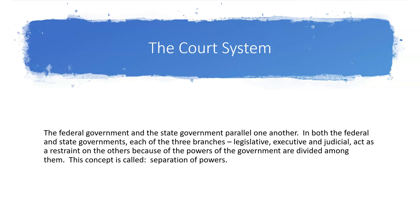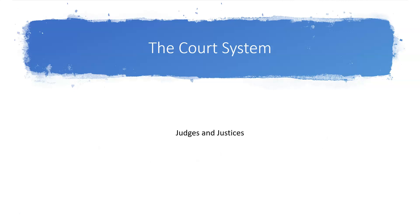Separation of powers — you should have a good understanding from your textbook reading about the reference of separation of powers. Federal courts can decide federal questions involving the application of the Constitution or federal statutes. For example, federal courts have the jurisdiction to decide federal civil rights laws, such as the Civil Rights Act of 1964 or the Age Discrimination and Employment Act of 1967. A state court would not have the jurisdiction or the power to decide such federal questions.